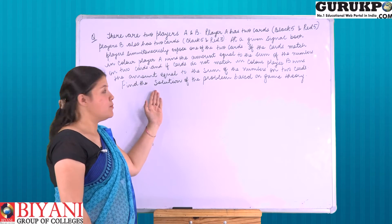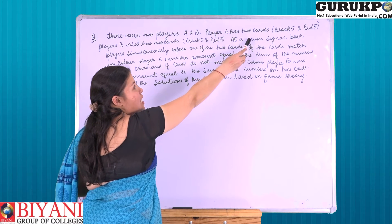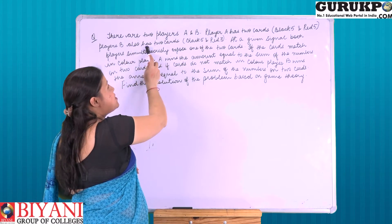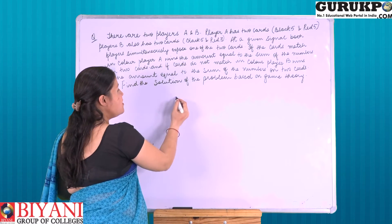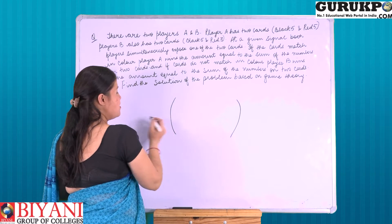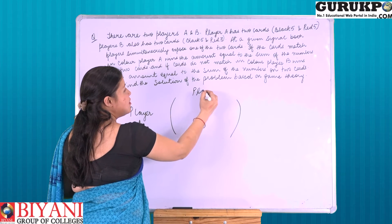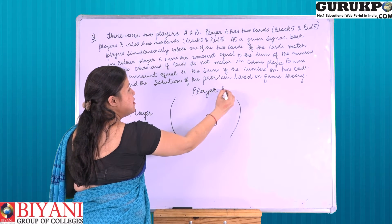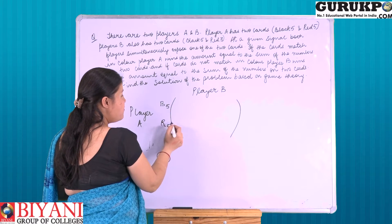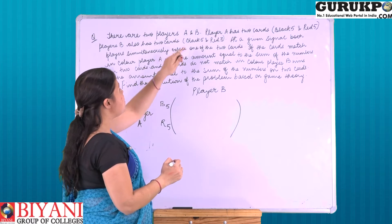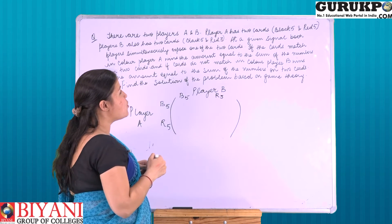Now let us have a look at the question. There are two players A and B. Player A has two cards: black 5 and red 5. Player B also has two cards: black 5 and red 3.